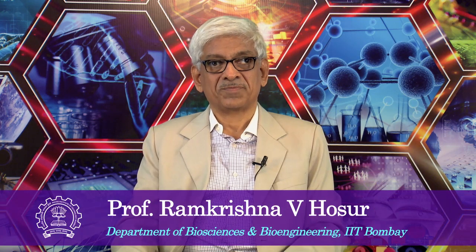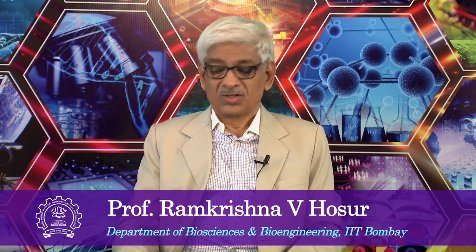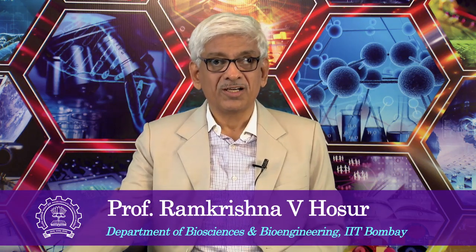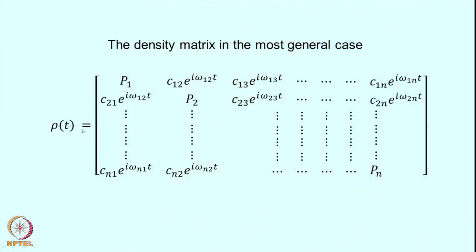We are going to continue the discussion of the density matrix for the description of NMR experiments. As a recap, I have put here the generalized form of the density matrix for an N-level system. We have this N-level system and if you recall, all the diagonal elements in the density matrix represent the populations of the individual levels, represented as P1, P2, P3, P4, and Pn.